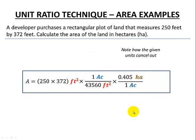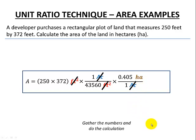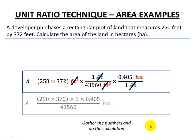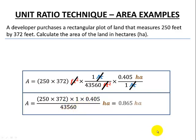We'll see how our units are canceling. The feet squared go away, the acres go away, and we're left with just hectares. Now we can gather all of our numbers and do our calculation. There's our 250 times 372, there's the 1, the decimal 405 from the numerator, and the 43,560 in the denominator. Our final answer to three decimal places is 0.865 hectares.